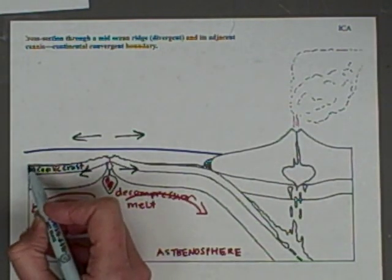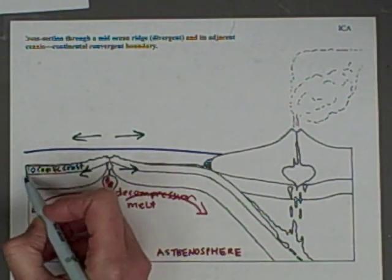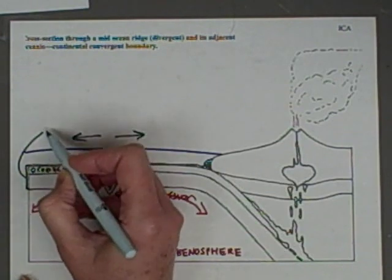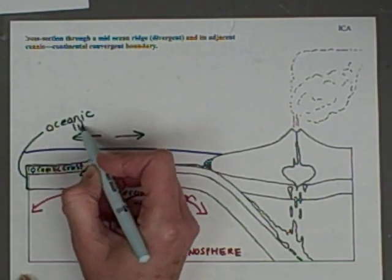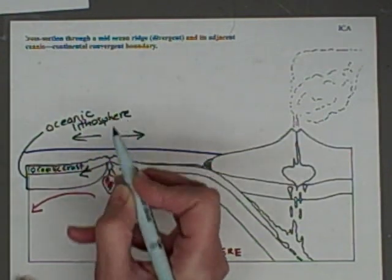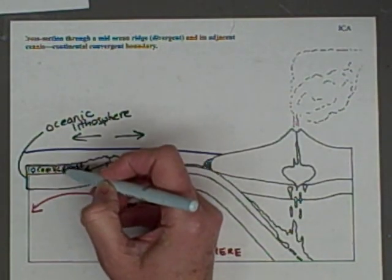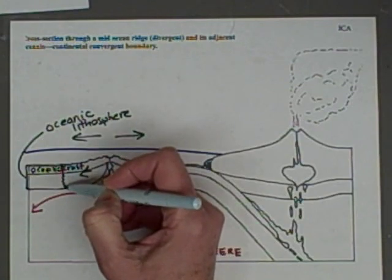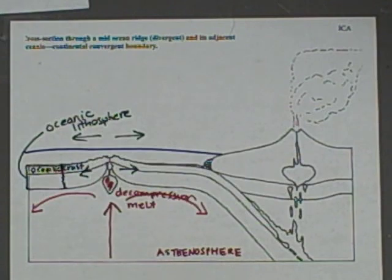Now the oceanic lithosphere is the crust plus the upper part of the mantle that is cooled and stuck to the bottom. So oceanic lithosphere. And the lithospheric plates are what's moving over the asthenosphere. So the lithosphere, you guys, it is the crust plus that upper part of the mantle that's cooled and stuck. And that's acting as a rigid plate.